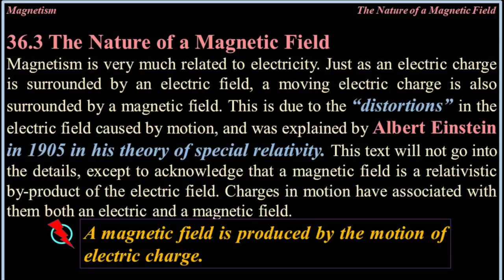36.3 The nature of a magnetic field. Magnetism is very much related to electricity. Just as an electric charge is surrounded by an electric field, a moving electric charge is also surrounded by a magnetic field. This is due to the distortions in the electric field caused by motion and was explained by Albert Einstein in 1905 in his theory of special relativity. A magnetic field is a relativistic byproduct of the electric field.